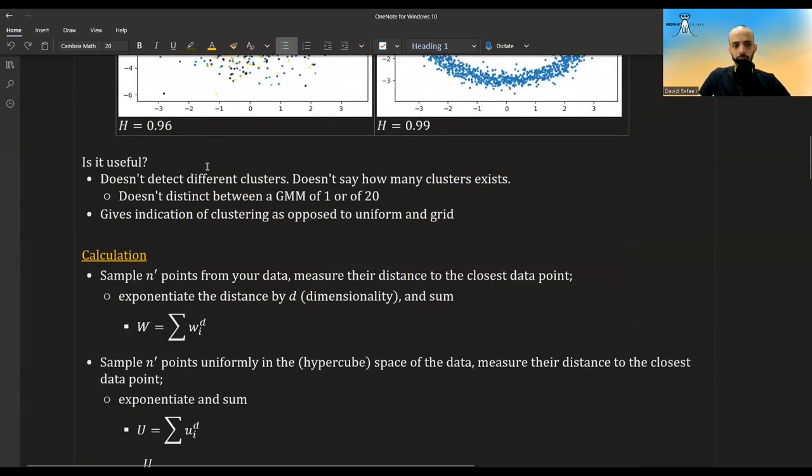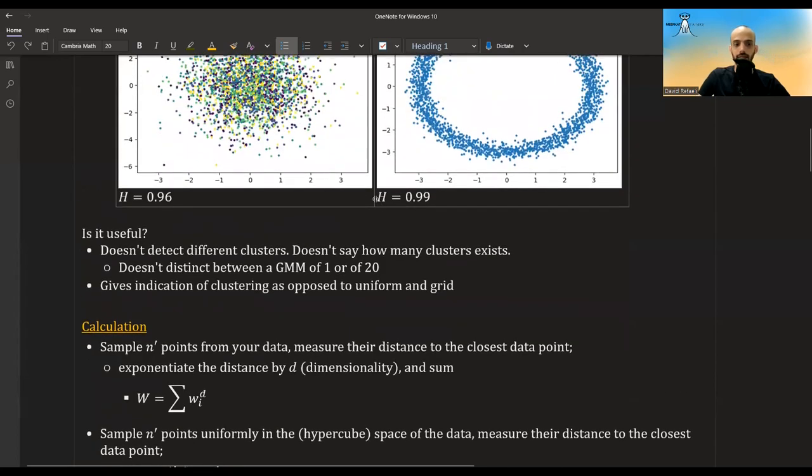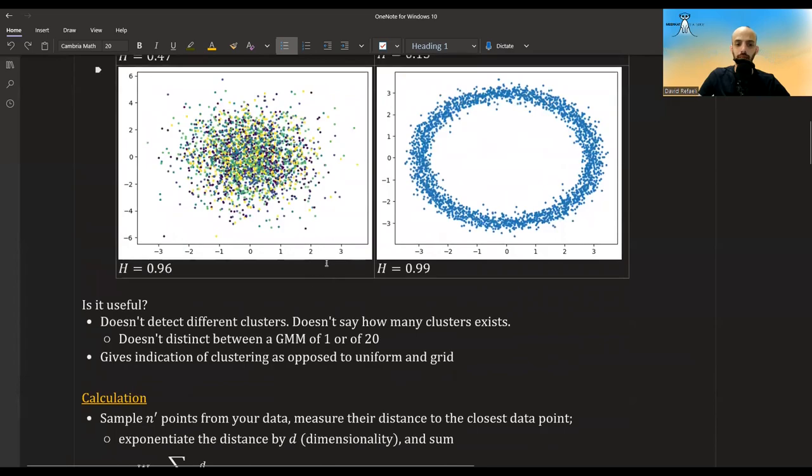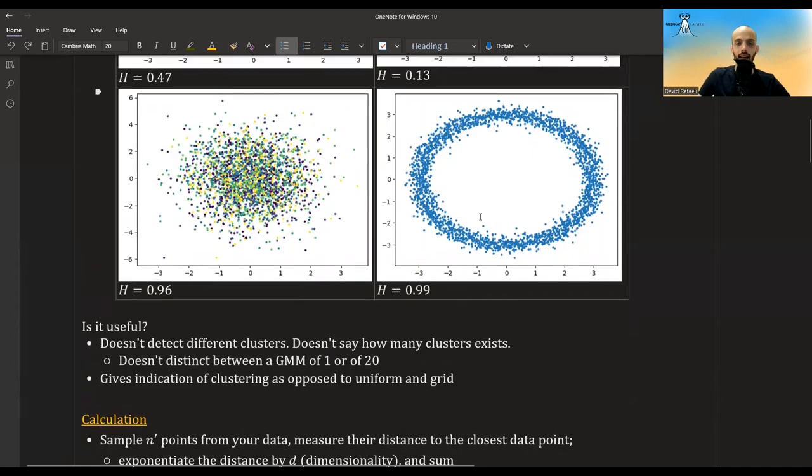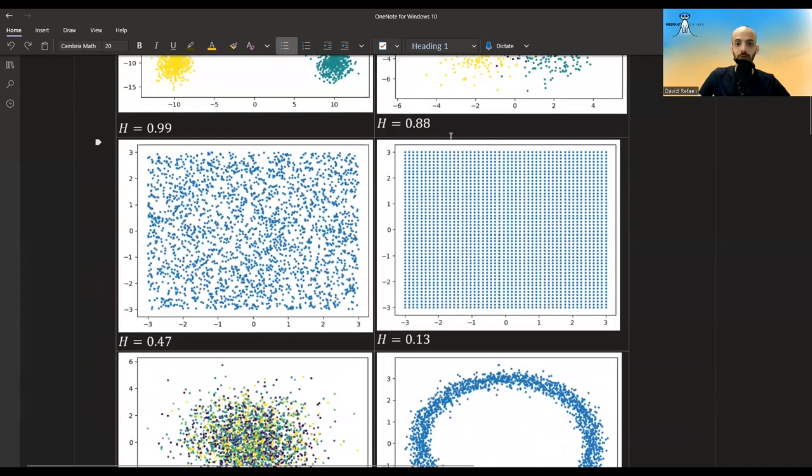Now, is it useful? Well, it doesn't detect different clusters. It doesn't say how many clusters exist. It doesn't really distinguish between a Gaussian mixture model of one Gaussian or of 20 Gaussians. But again, it does give some indication if there is some clusters or patterns in the data as opposed to a uniform distribution or a grid.